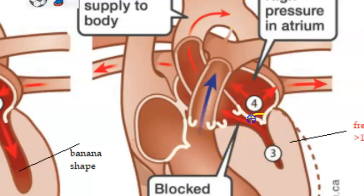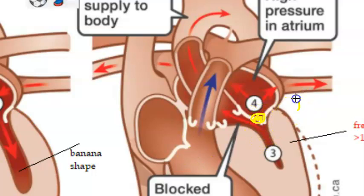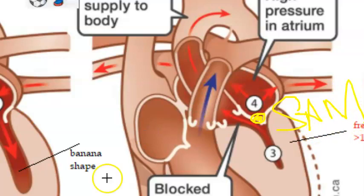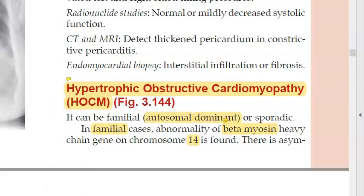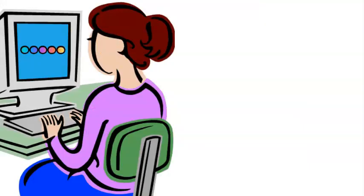The mitral valve moves anteriorly during systole. This systolic anterior motion of the mitral valve is called SAM — systolic anterior displacement of the mitral valve. In this condition there can be sudden death.